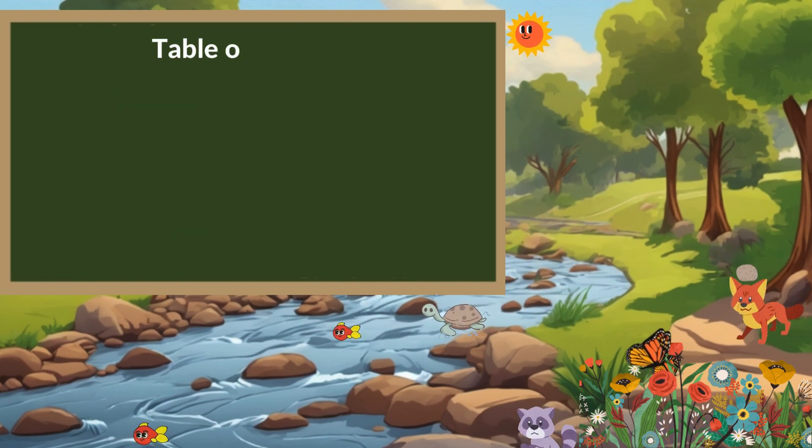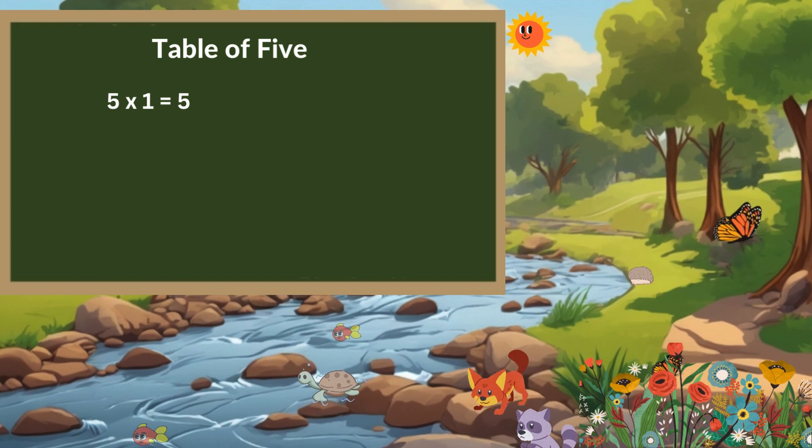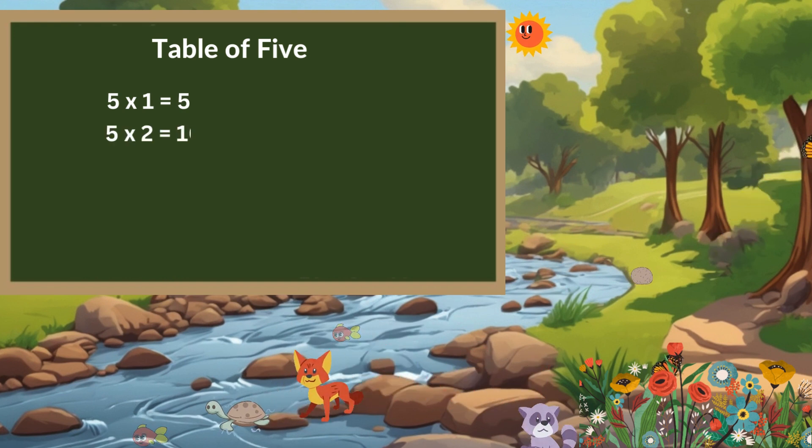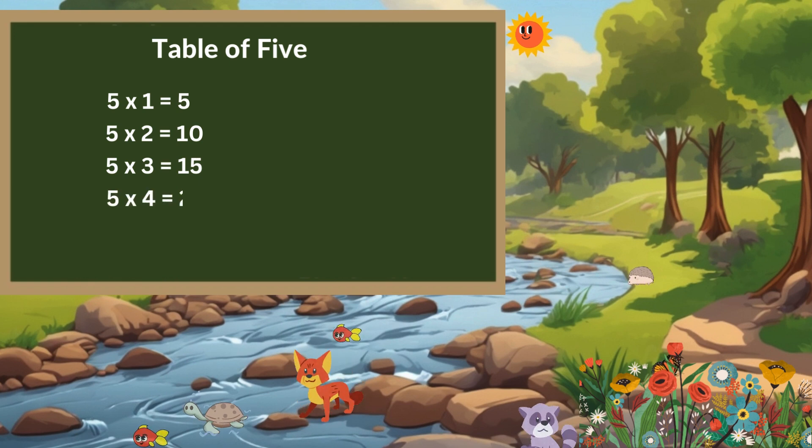Next, table of 5. 5 times 1 is 5, 5 times 2 is 10, 5 times 3 is 15, 5 times 4 is 20.